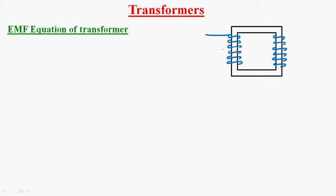Hi guys, now we are going to derive the EMF equation of a transformer. To derive the EMF equation of a transformer, let us consider the magnetic core of the transformer, to which one winding is wound here and another winding is wound at this point. A source is connected to one winding and a load is connected to the other winding.